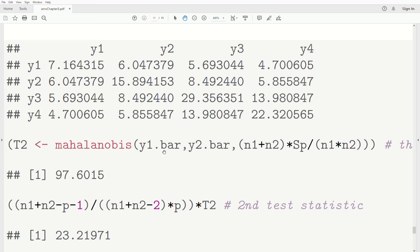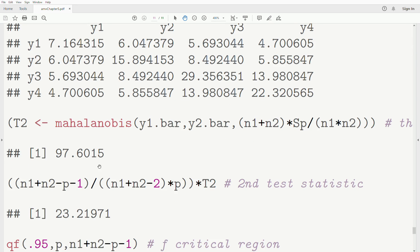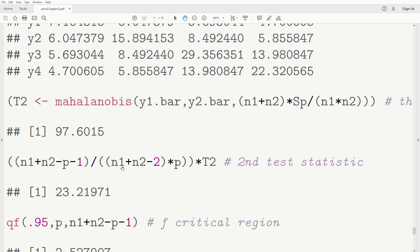Then we calculate Mahalanobis distance. We have Y1 bar, Y2 bar. Notice that the constant is incorporated into the variance-covariance matrix. We get 97.6, and that's what we got above.